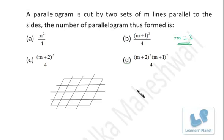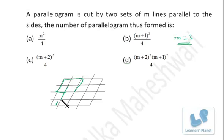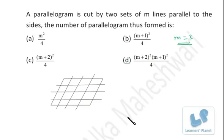The mistake in just calculating 4×4=16 is that we're only counting the small parallelograms. But larger combined parallelograms also exist — this region, this region, and so on are also valid parallelograms. We can't keep manually counting all of them; there needs to be a logical approach.